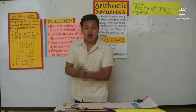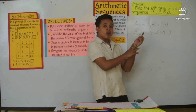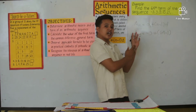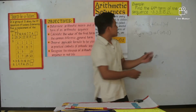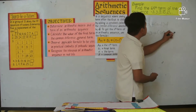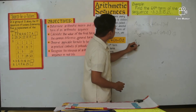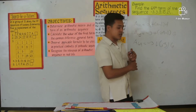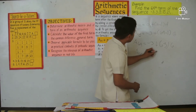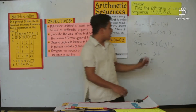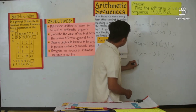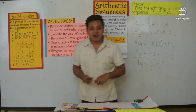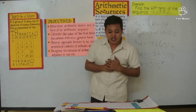What is our D? We subtract the second term from the first term — or any term from its preceding term. So what is our common difference? 6. Very good. So continuing: a sub 64 equals negative 3, and 64 minus 1 is 63, times 6. What is 63 times 6? That is 378. So a sub 64 equals 375. Do you have any questions? Am I understood? Very good.